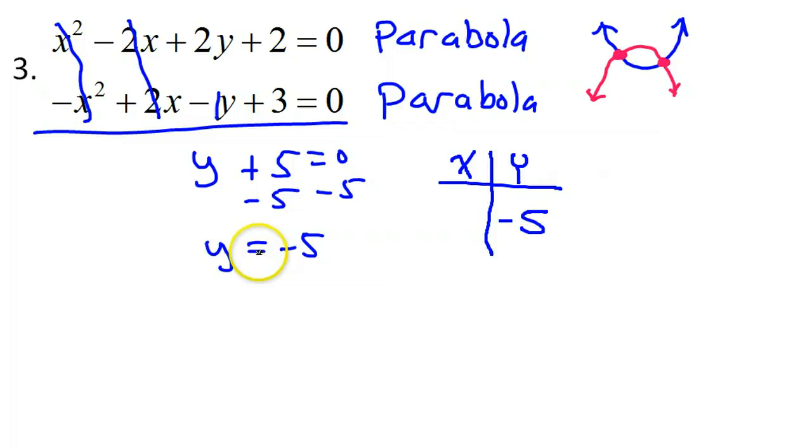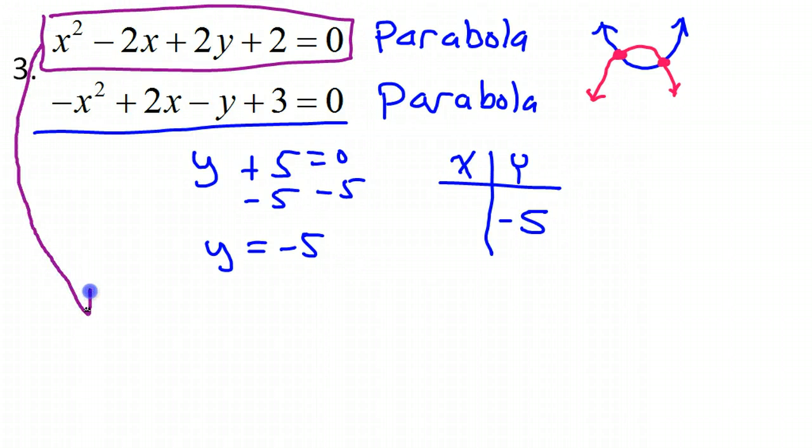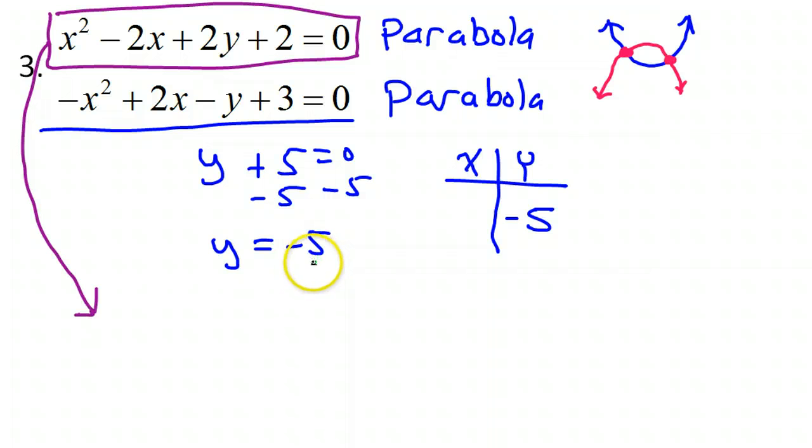So, the way you find the x values that go with this y value is you take it and you plug it back into one of the original equations. It doesn't matter which one, just pick one. I feel like doing this in purple. I'm going to use the top equation here. So I'm going to take this and I'm going to substitute negative 5 for the y value. So that's going to leave me with x squared minus 2x plus 2 times negative 5 plus 2 equals 0.